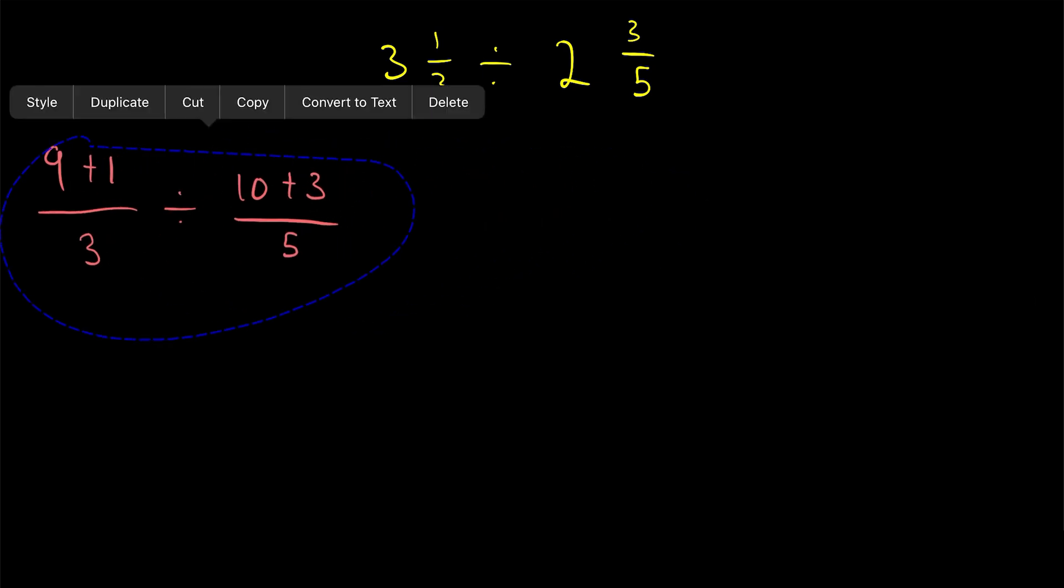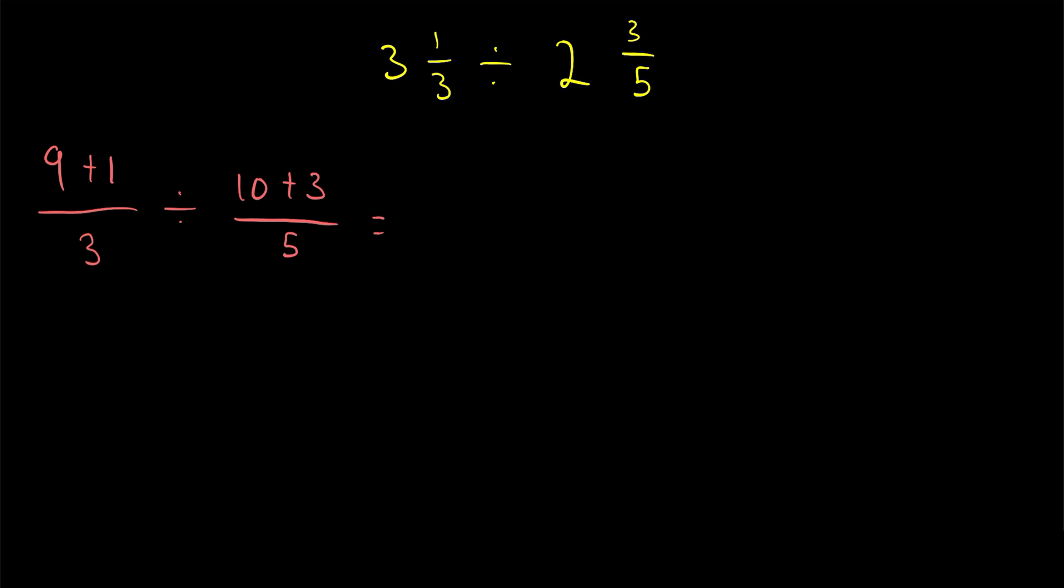Then we just need to simplify our numerators. 9 plus 1 is 10, divided by 3. And then that's getting divided by (10+3)/5, which is 13/5.